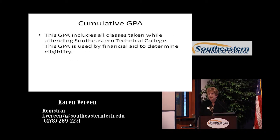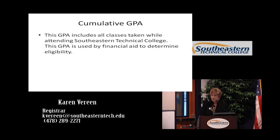Your cumulative GPA is your GPA for every class that you've taken at Southeastern Tech. If you were here ten years ago and had a GPA at that time, it's going to add in with whatever you're taking now — it's a total GPA. This is the GPA that financial aid uses. We use semester GPA most of the time for probation and suspension, but financial aid uses your cumulative — that's every class you've ever taken here.